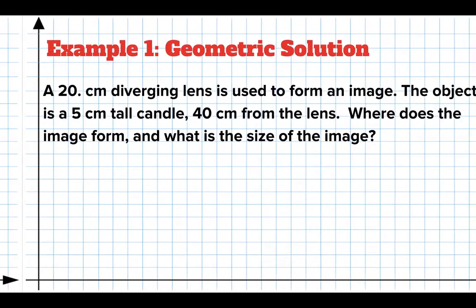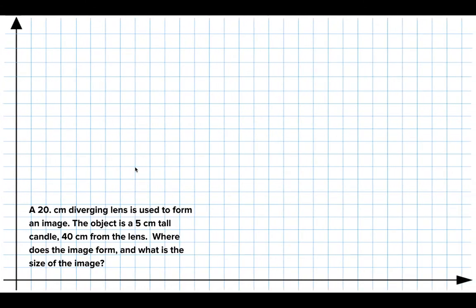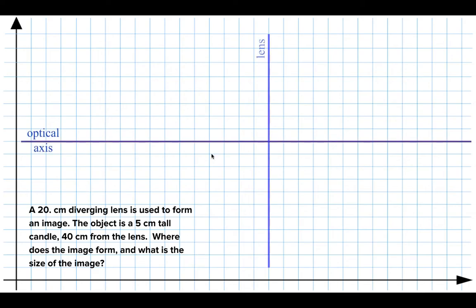Let's do a ray diagram of a problem. We have a 20 centimeter diverging lens — as soon as I read diverging lens, I know the focal length is negative, so it's negative 20. The object is a 5 centimeter tall candle which is 40 centimeters from the lens. I want to know where the image is formed and what is the size of the image. I'll draw my optical axis and lens, with a focal length of negative 20 centimeters.